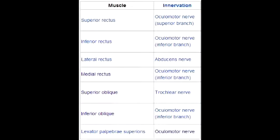The picture of extraocular muscles and nerves shows the superior rectus muscle, which is innervated by cranial nerve 3, the oculomotor nerve. Then you also see the superior oblique muscle, innervated by cranial nerve 4, the trochlear nerve. Then you see the medial rectus muscle, which is innervated by cranial nerve 3, the oculomotor nerve.